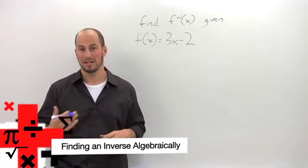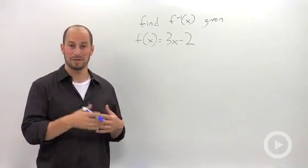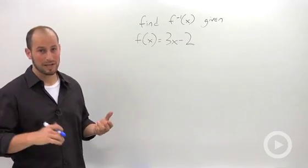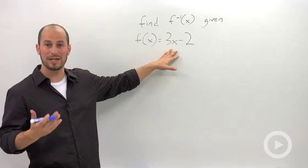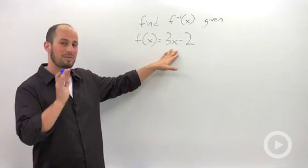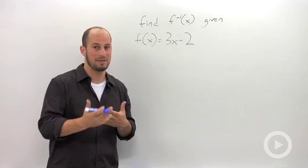Finding the inverse of a function algebraically. For these particular examples, what we want to do is find an equation for an inverse function. We're given a function here. In this case, we know that our equation is a line, 3x minus 2. We know that's a line, therefore we know it's one-to-one and it's going to have an inverse.